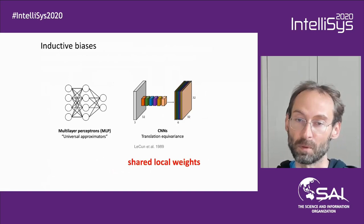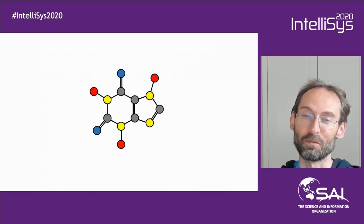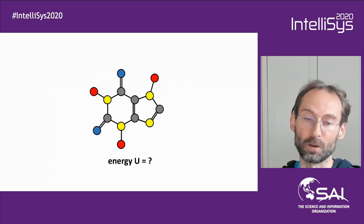Now let me show you a different problem. What you see here is a molecule — this is a molecule of caffeine. So this is a graph: the nodes represent atoms, the edges represent chemical bonds. Let's say we want to predict some chemical property of this molecule, such as atomization energy — the energy that it takes to break it apart.